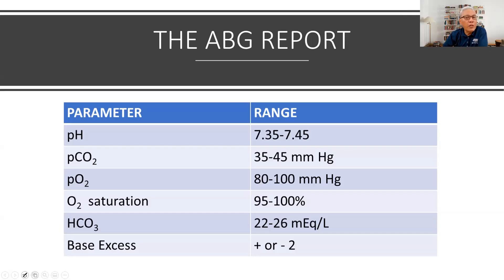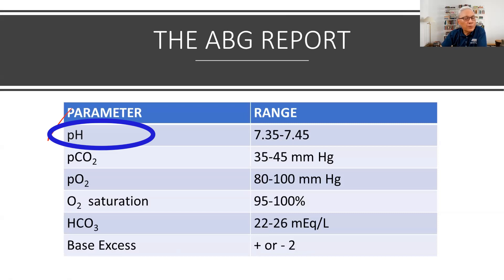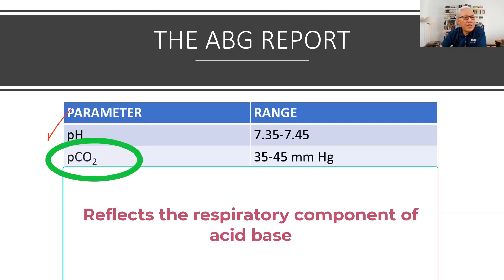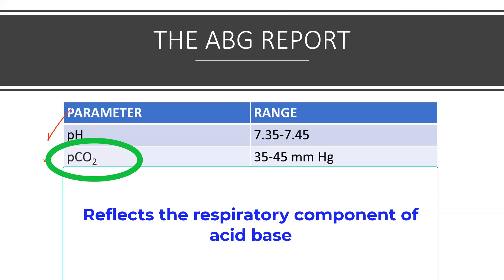There are several parameters that we look at whenever we're looking at acid-base balance, and they are in front of you. The pH determines whether or not the blood is normal, acidic, or alkaline. The PCO2, which we often refer to as the respiratory component of acid-base, is another parameter that we look at whenever we have an ABG report.